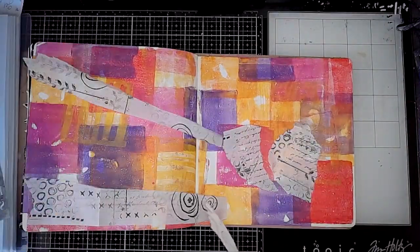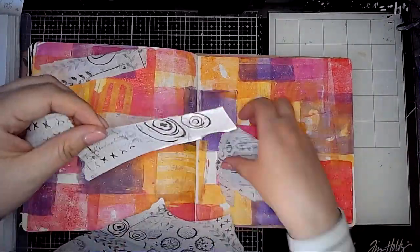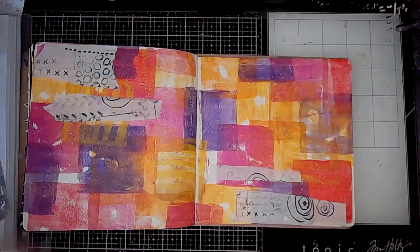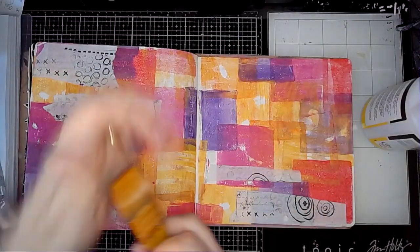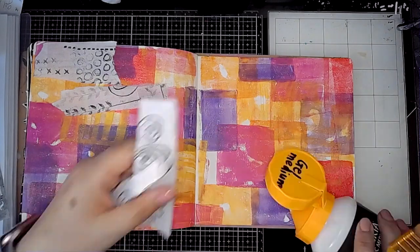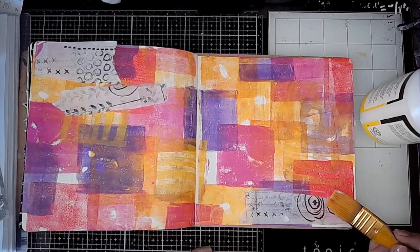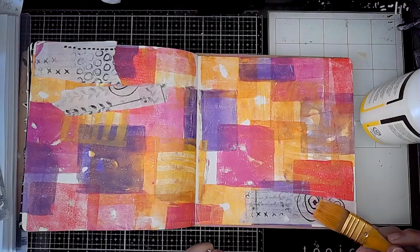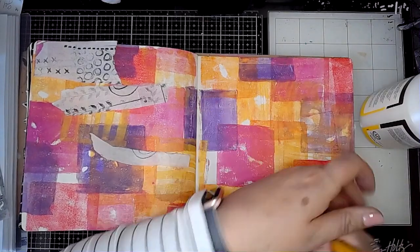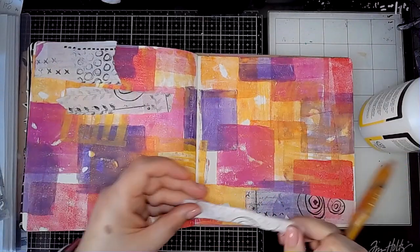Then I'm going to use some collage paper on the background. This is one that I've created myself just on some really inexpensive tissue paper just using some of the mark making stamps from the Tim Holtz Media Marks set and just stamping it all over the tissue paper and then I'm just sticking it down using some gel medium.